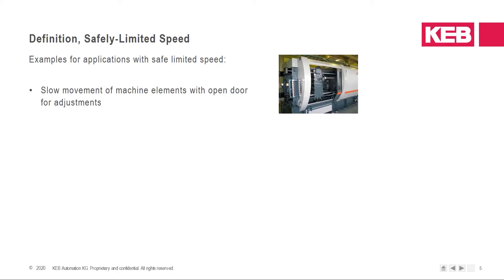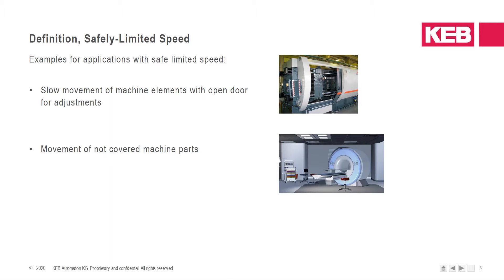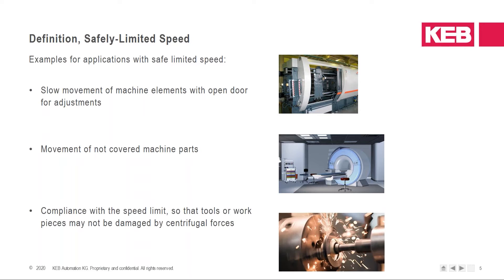Examples for applications with safe limited speed: typically slow movement of a machine element with open door for adjustments, cleaning, or maintenance; movement of uncovered machine parts — for example, a CT scanner which moves around the patient on the table; and also compliance with a speed limit so that tools or workpieces may not be damaged by centrifugal forces, such as grinding machines or similar.